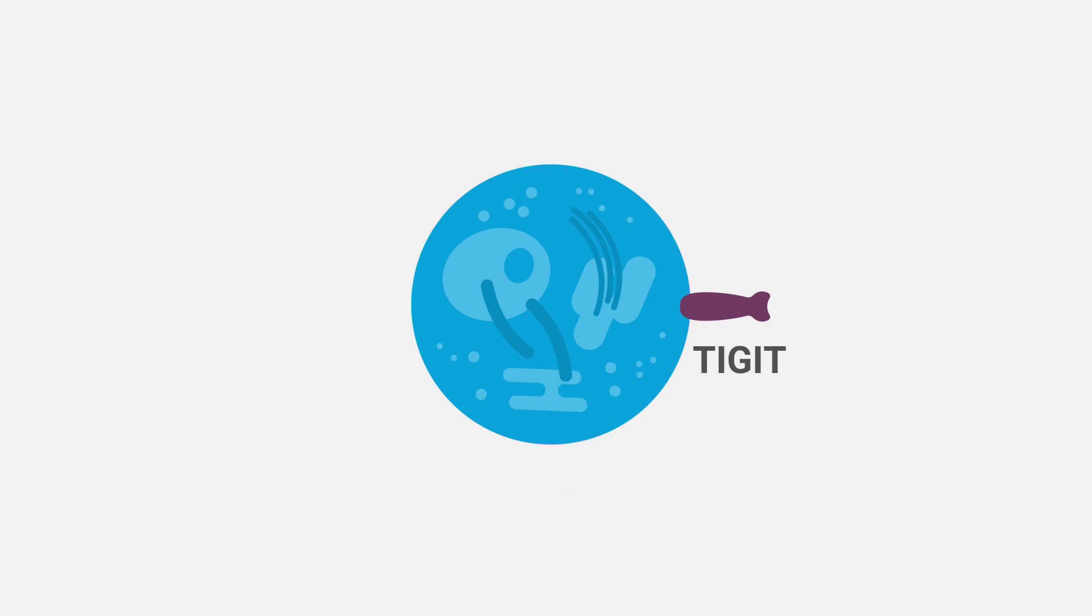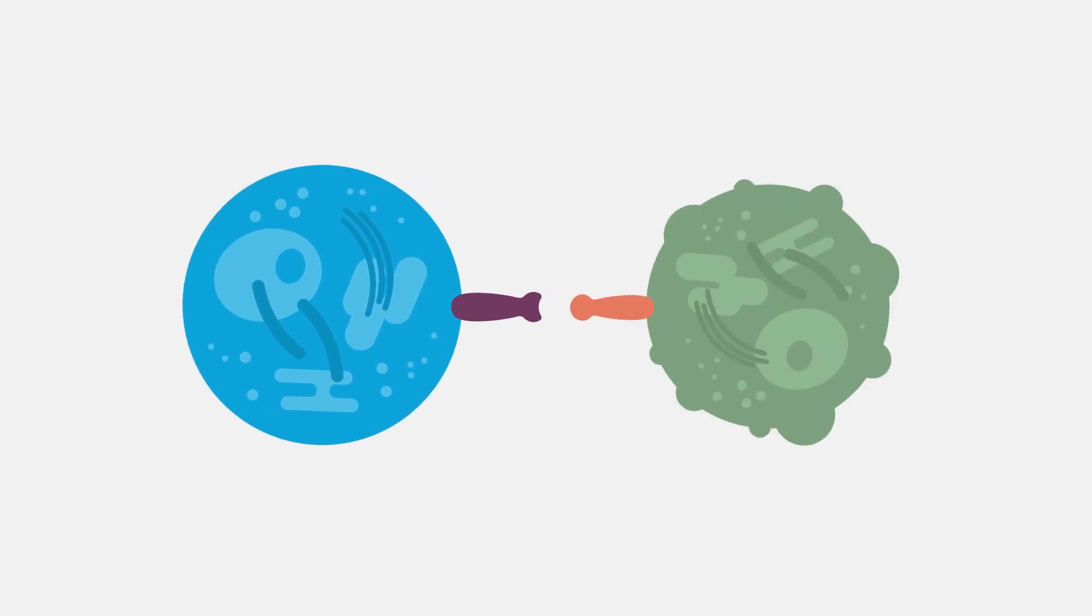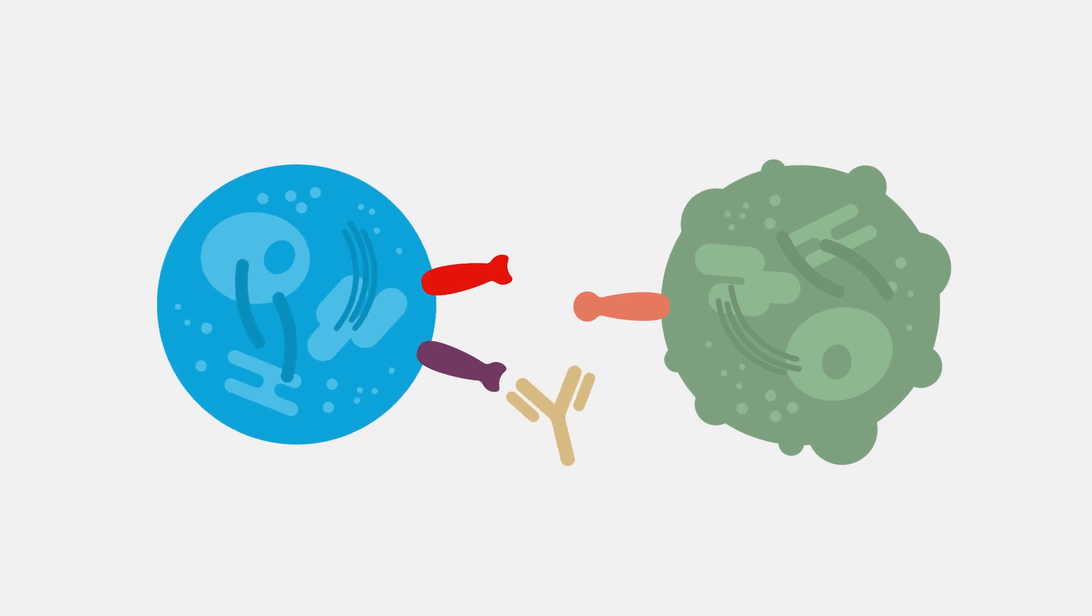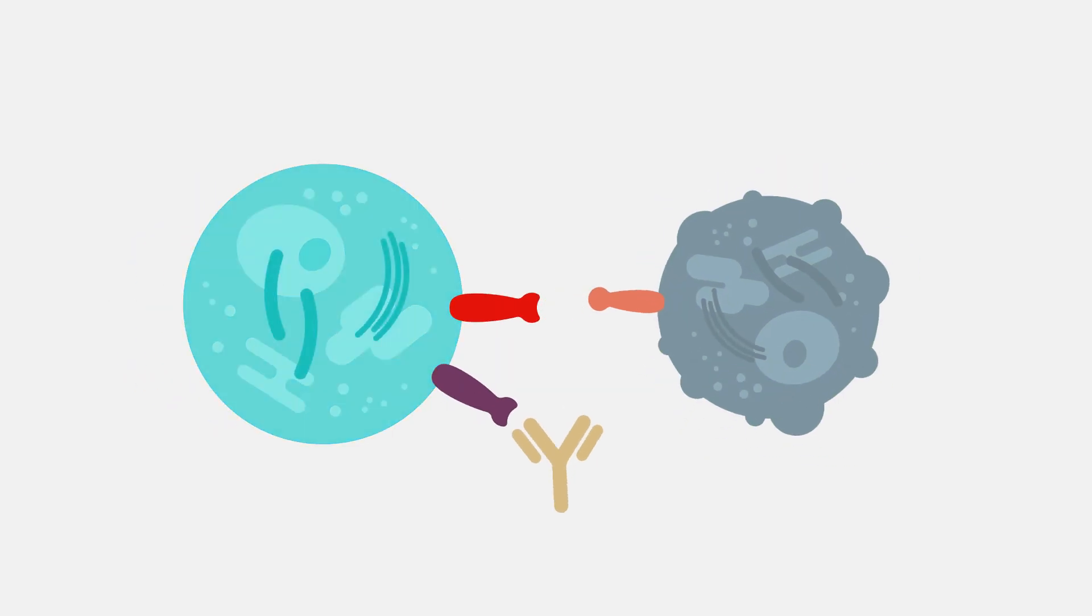TIGIT is an immune checkpoint receptor on the surface of T cells. When TIGIT binds to its ligand CD155 on a tumor cell, T cell activation is inhibited. Scientists are developing drugs that block TIGIT, allowing CD155 to bind to a competing receptor, CD226, which can activate T cells to destroy the tumor.